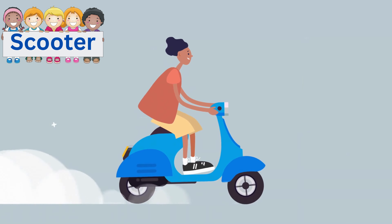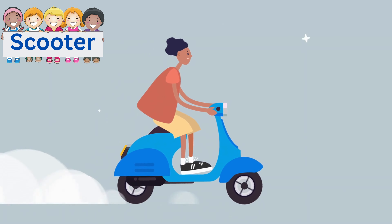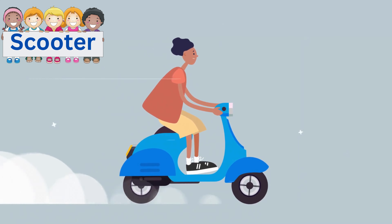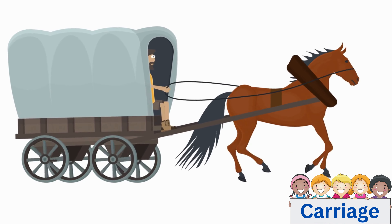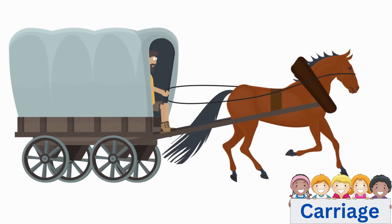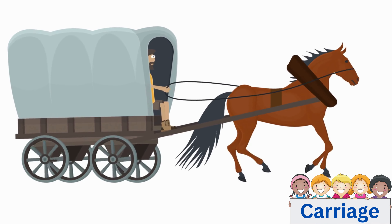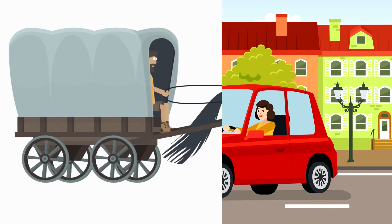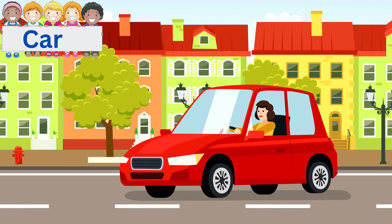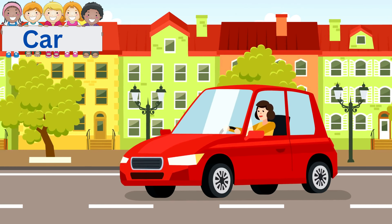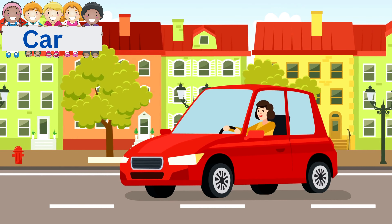A scooter is also a type of child's bicycle. A Carriage. A carriage is a four-wheeled, horse-drawn vehicle used to convey passengers. A Car. A car is a vehicle that has wheels, carries a small number of passengers, and is moved by an engine.